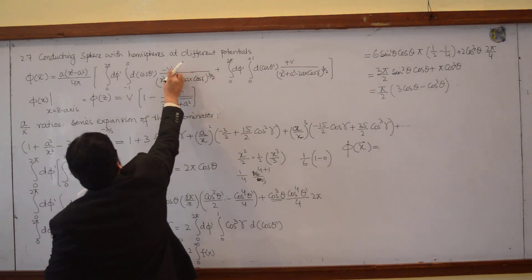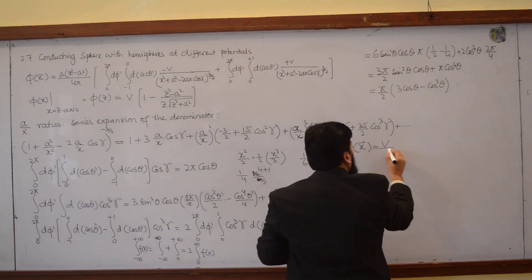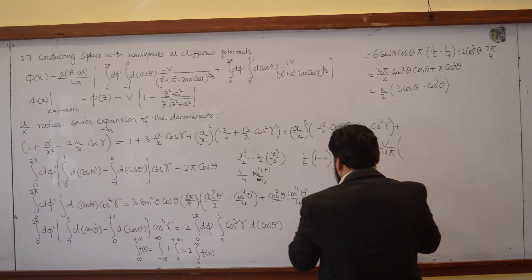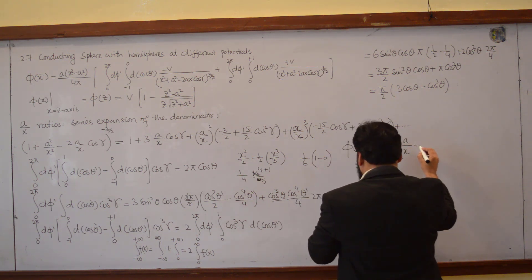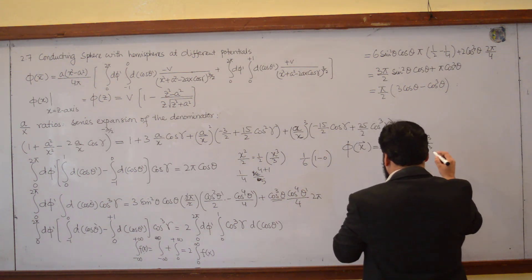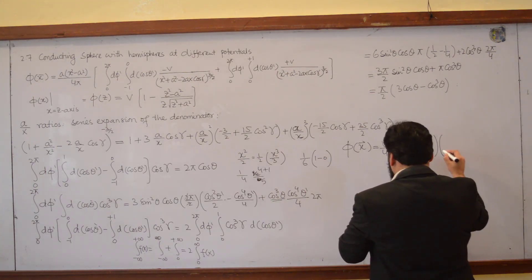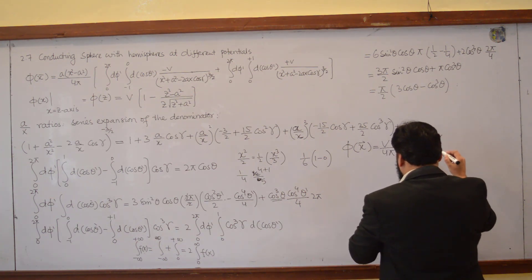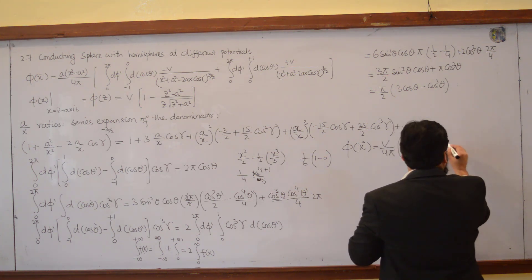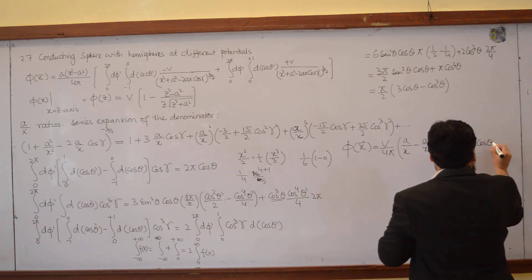Taking v as common and 4π is there, so this becomes v over 4π. Then I write a over x minus a cube over x cube. And then I can write 3a over x — let me put a curly bracket here — 3a over x, 2π cos theta.